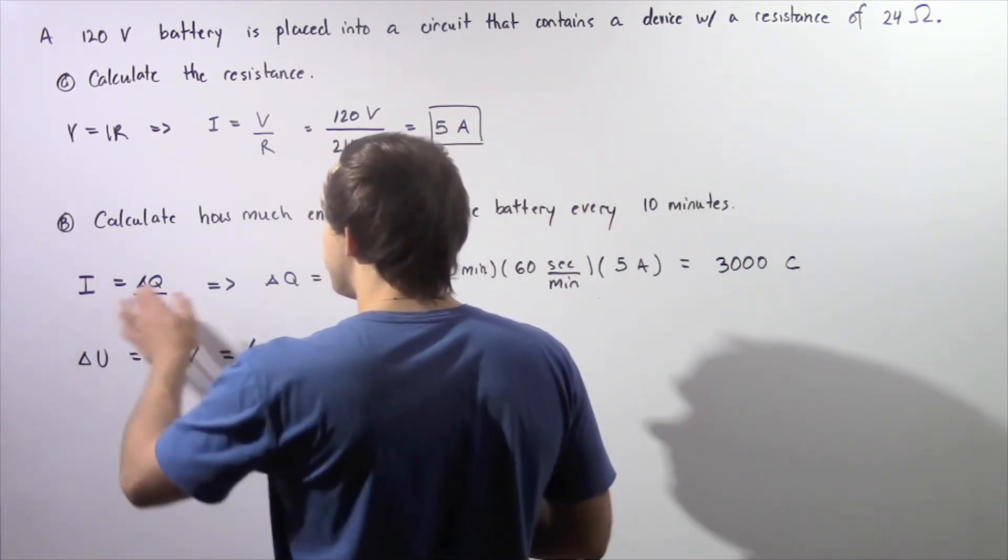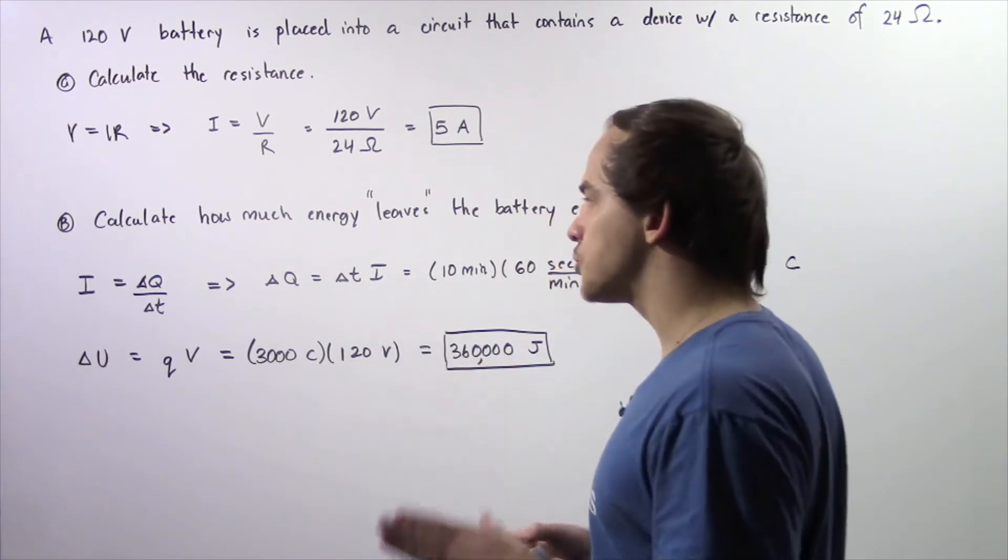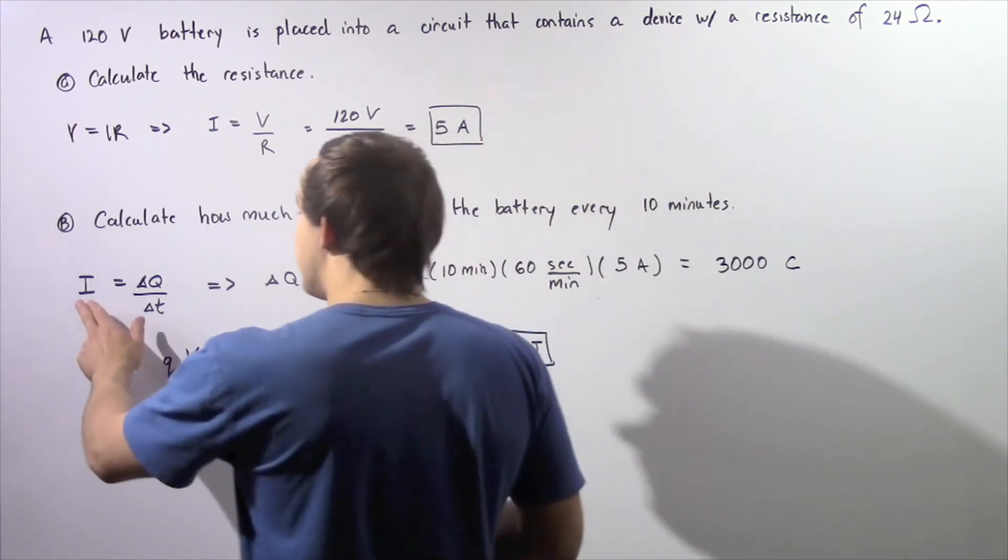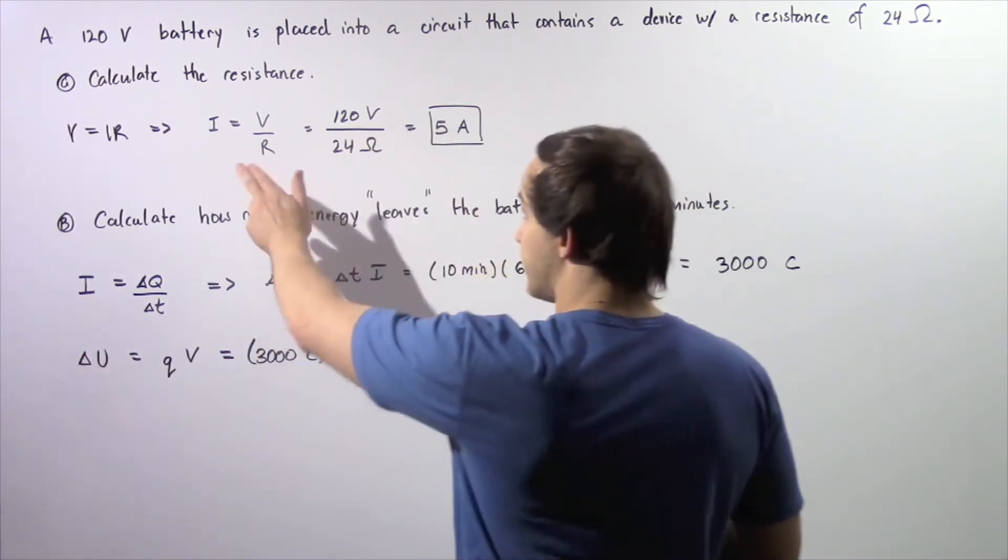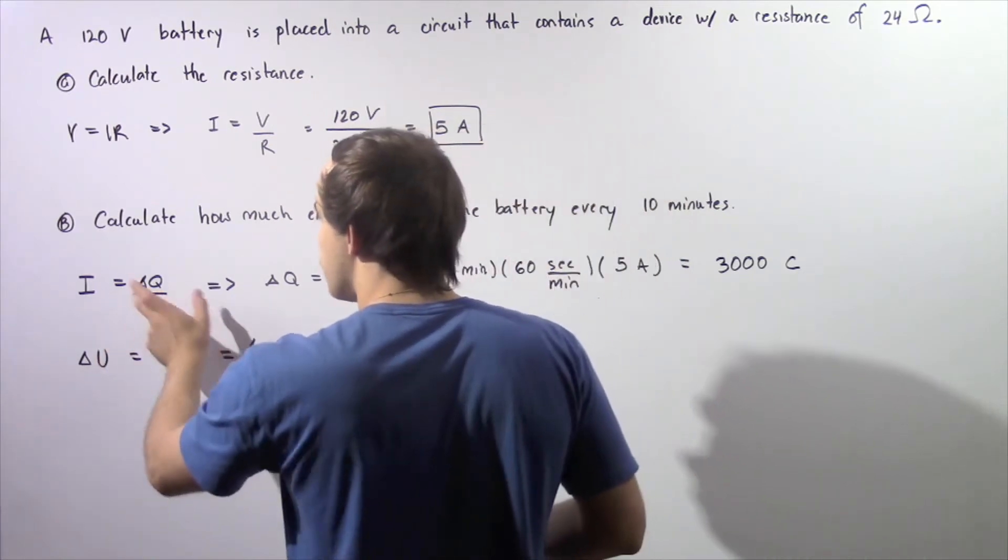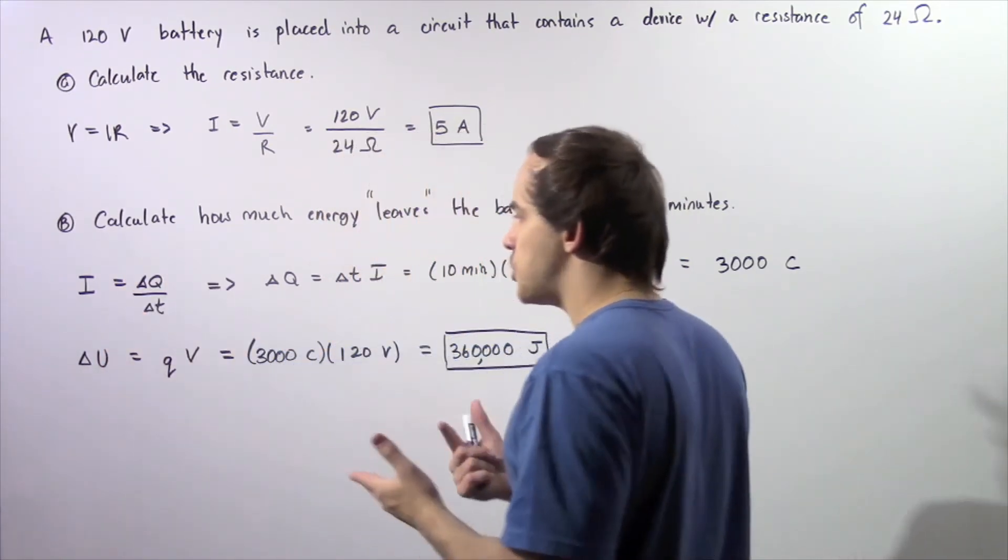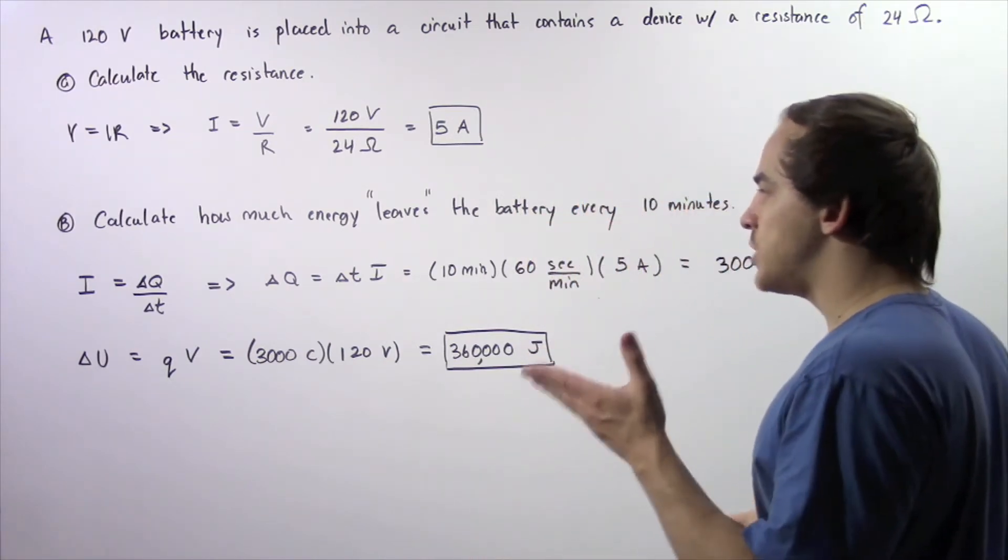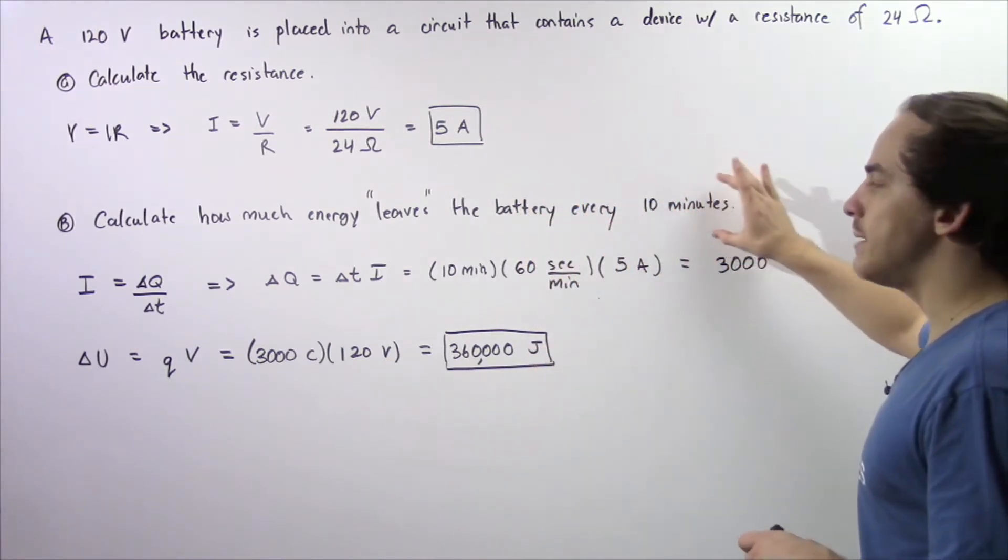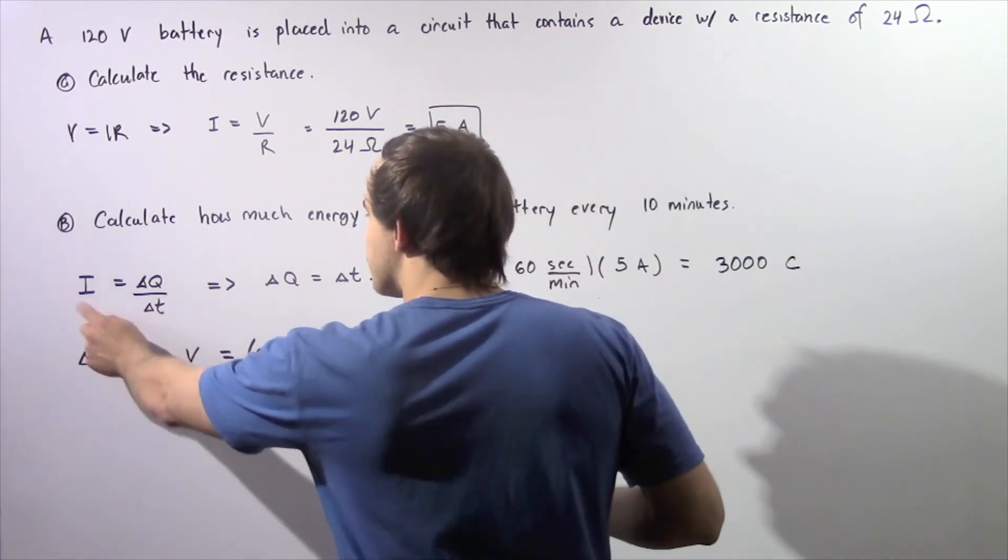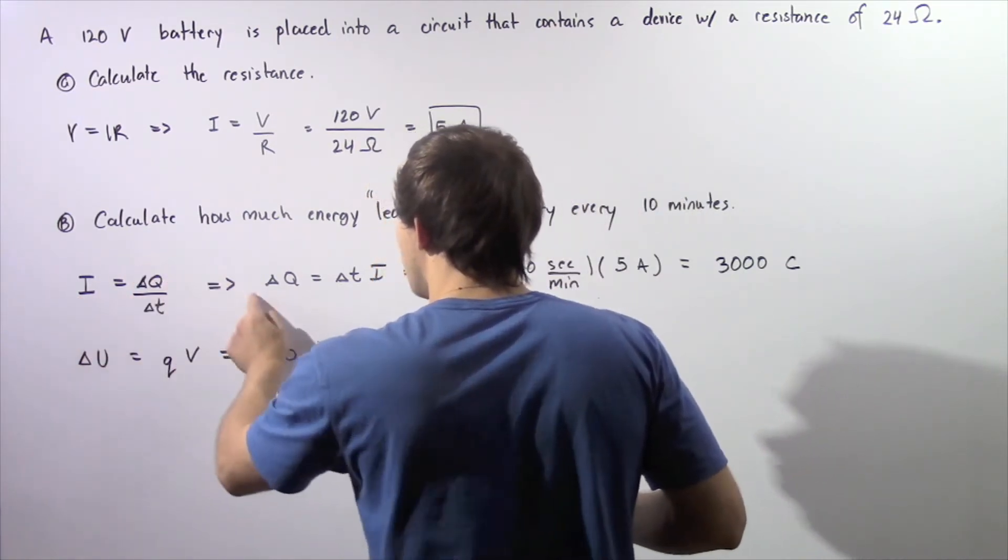We apply the definition of our average current. The average current which was calculated in part A is equal to the change in our electric charge divided by the change in time. Our change in time is given to be 10 minutes. So we take this, rearrange it, solve for our change in Q.